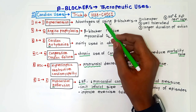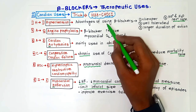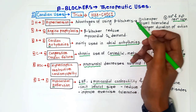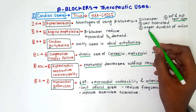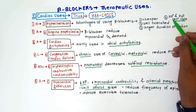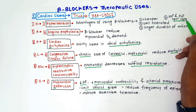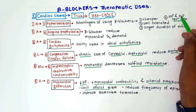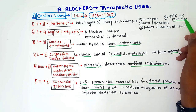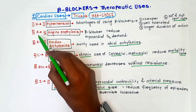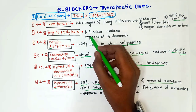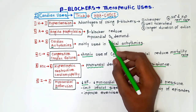For hypertension, the advantages of using beta blockers are that they are cheaper, well tolerated, have a longer duration of action, and sodium and water retention is rare. Sodium and water retention increases blood pressure, so its rarity makes beta blockers favorable in hypertension. For angina prophylaxis, beta blockers reduce myocardial oxygen demand by reducing heart rate, myocardial contractility, and arterial pressure.